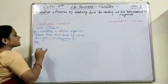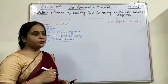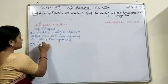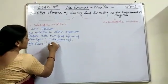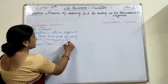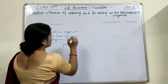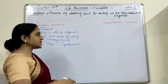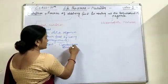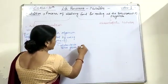Examples of organisms showing autotrophic nutrition are all green plants as well as cyanobacteria. As studied in the previous class, cyanobacteria is also known as blue-green algae.